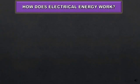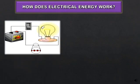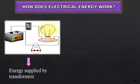How does electrical energy work? The charges move in one direction in the wires because of the energy supplied to them by transformers. So the transformers supply energy, the charges move in a wire, which in turn makes our appliances work.